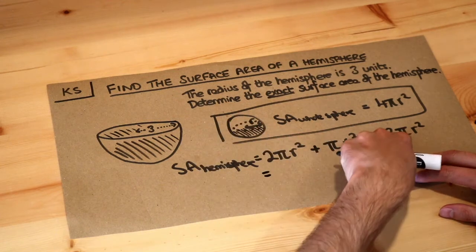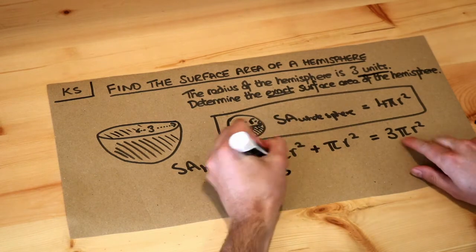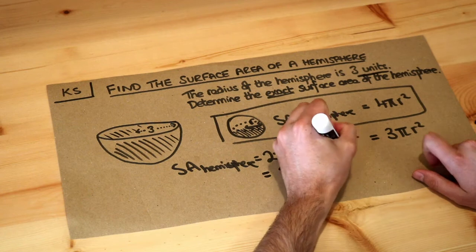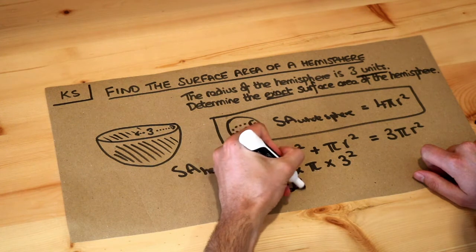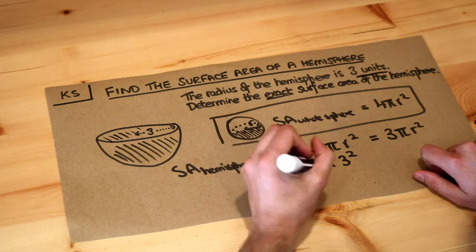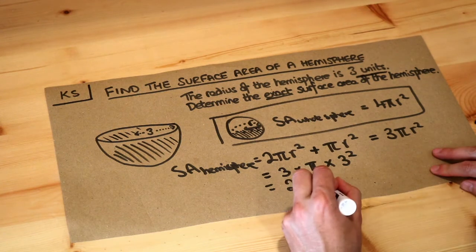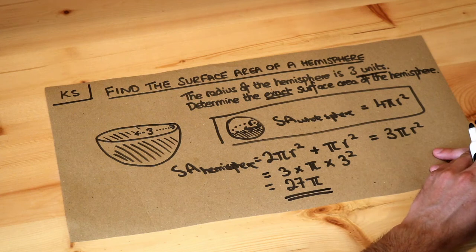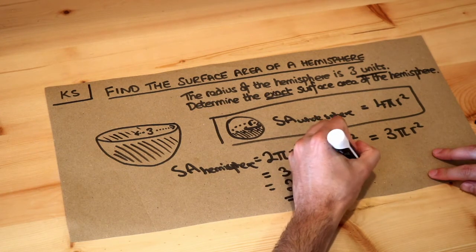So let's apply 3 pi r squared with a radius of 3 units. We do 3 times pi times r squared, so 3 squared. Now 3 squared is 9, times 3 is 27, so the answer is 27 pi. The question says to determine the exact surface area, so you should leave your answer in terms of pi rather than converting to a decimal — that is the final answer. There are no units given, but if there were, you would write units squared.